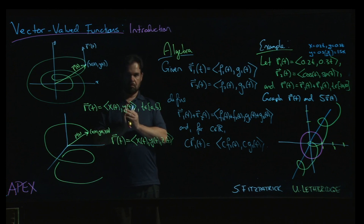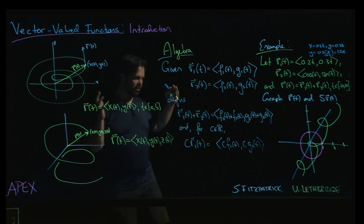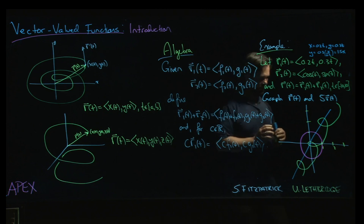All the vectors in your vector valued function, the magnitude gets multiplied by 5. And so you're just magnifying the whole image, right?